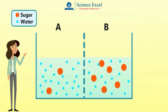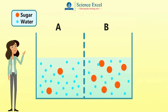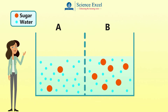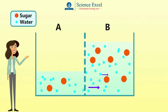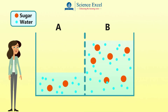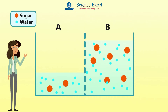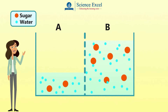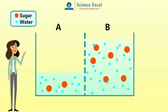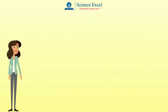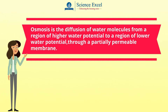An interesting thing to know about osmosis is that the movement of water is affected by the amount of substances dissolved in it. Water is at a higher potential on side A and at a lower potential on side B. We see that the water molecules move from side A to side B. This movement occurs until the concentration of water is equalized on both sides.